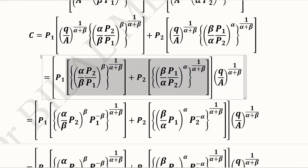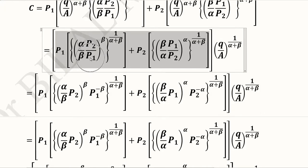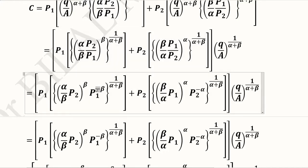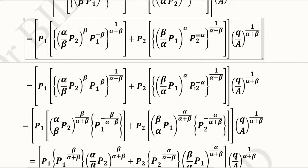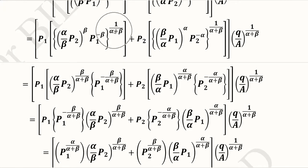Now within this term, p1 is getting multiplied with one term in the curly bracket and p2 is multiplied with another term. So p1 can be solved with this p1 and p2 can be solved with this p2. We separate p1 — when we reciprocalize it, its power becomes minus β — and p2 gets liberated with power minus α. Then this minus β will be multiplied with the whole power 1 over (α + β), becoming minus β over (α + β), and p2 with power minus α becomes minus α over (α + β).